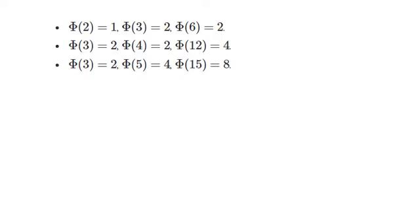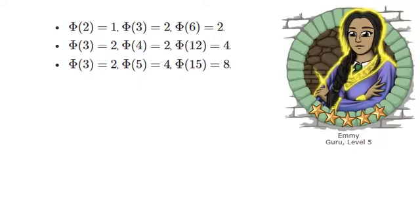Uh, Emmy? I think you're trying to show us that phi is multiplicative. Like, 2 times 3 is 6, so then phi of 2 times phi of 3 is equal to phi of 6.